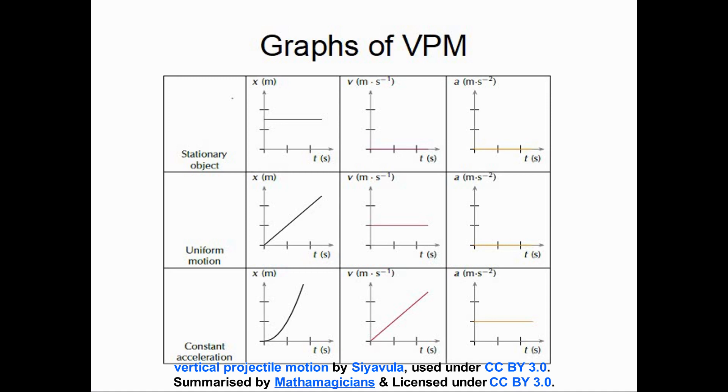For a uniform object, the displacement time graph is a steady increasing straight line curve. For the velocity time graph, it is constant because it's moving uniformly at no acceleration, hence the acceleration time graph is zero.